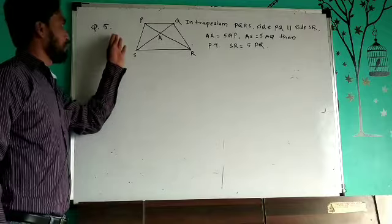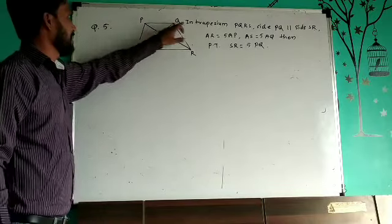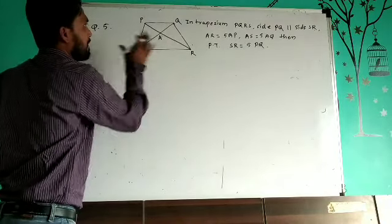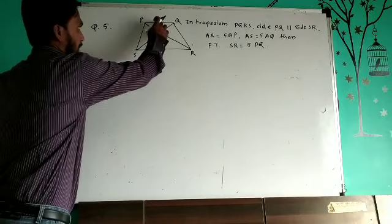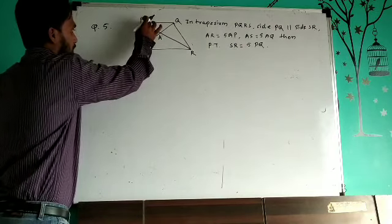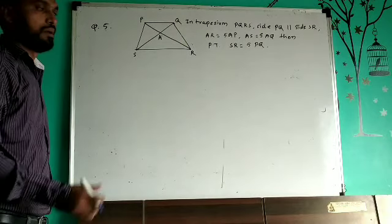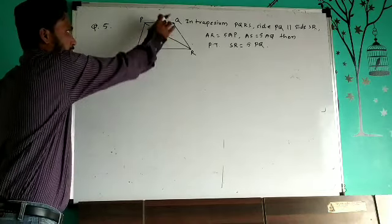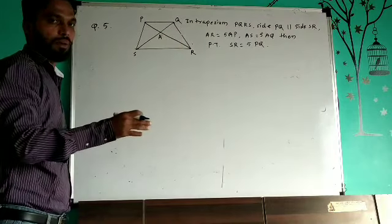This is the 5th example in Practice Set 1.3. In trapezium PQRS, side PQ is parallel to side SR. The parallel pair is PQ parallel to SR. By definition of a trapezium, one pair of opposite sides is parallel and the other pair of opposite sides is non-parallel.